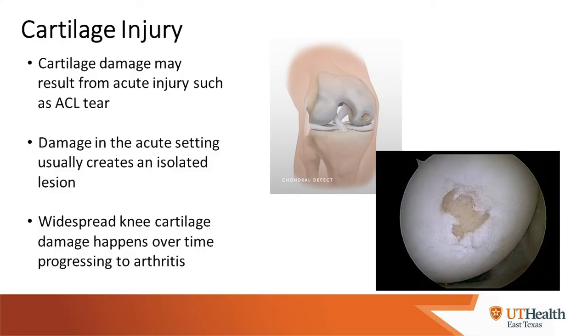Without the meniscus, we get cartilage injury — and cartilage injury can occur in isolation across a wide spectrum. The images here show a cartilage injury from acute trauma, where a chunk of cartilage has been knocked out, rather than the broad-based change seen in arthritis. An isolated lesion happens acutely, whereas widespread damage is more likely attritional over time and associated with the development of arthritis.